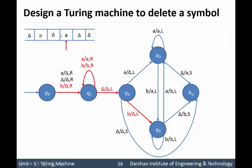Now moving in the left direction, we have A. We have to shift B, which we have already replaced by delta. So A is replaced by B and we move to the left direction. In the left direction we have delta, so replace delta by A and the string will be accepted in the halt state. States Q2, Q3, and Q4 help us to remember the previous symbol of the string.